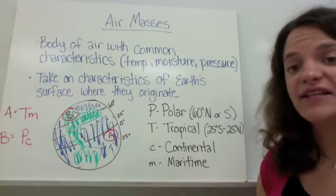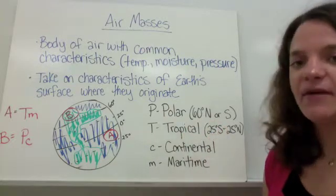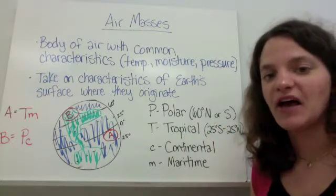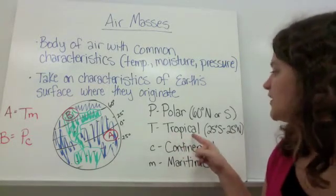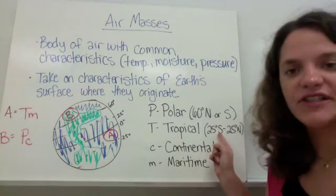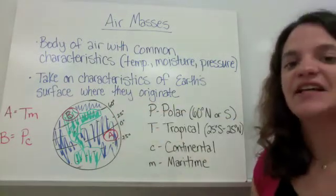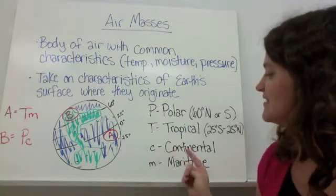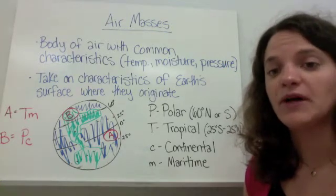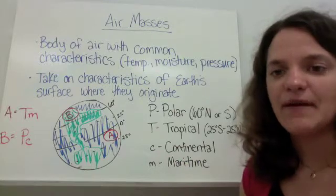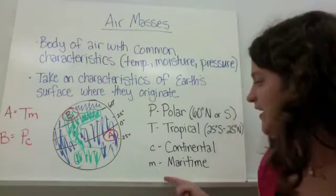Here's a key to show how scientists indicate things about air masses. A capital P means it's a polar air mass, at 60 degrees north or south or higher. A tropical air mass originates between 25 degrees south and 25 degrees north, indicated with a capital T. A continental air mass forms over land, indicated with a lowercase c. A maritime air mass originates over an ocean, indicated with a lowercase m.